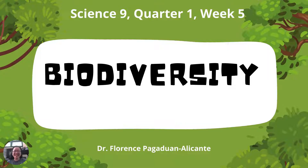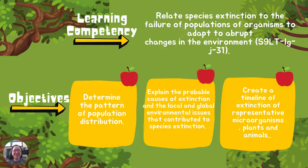Good day everyone! Today, let's talk about biodiversity. The learning competency relates species extinction to the failure of populations of organisms to adapt to abrupt changes in the environment. The objectives are to determine the pattern of population distribution and explain the probable causes of extinction and the local and global environmental issues that contributed to species extinction.